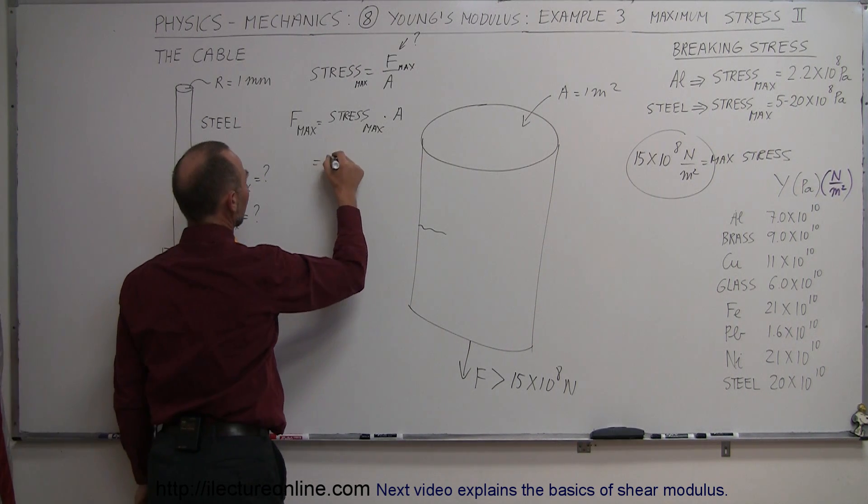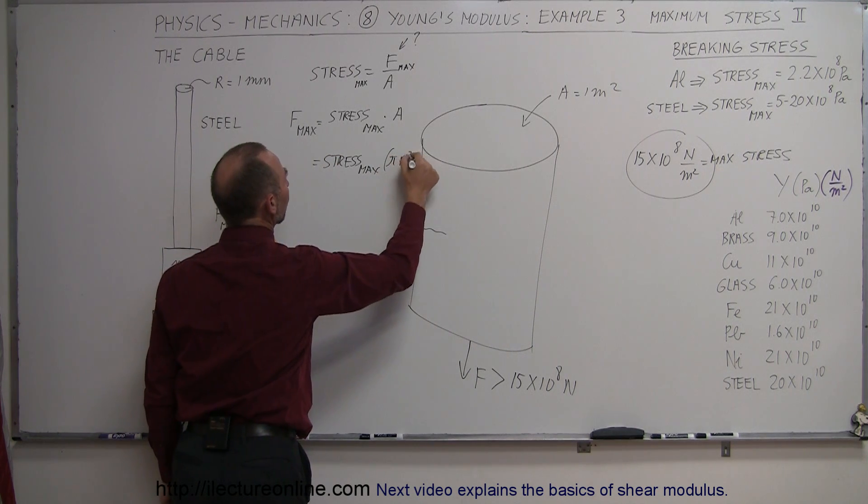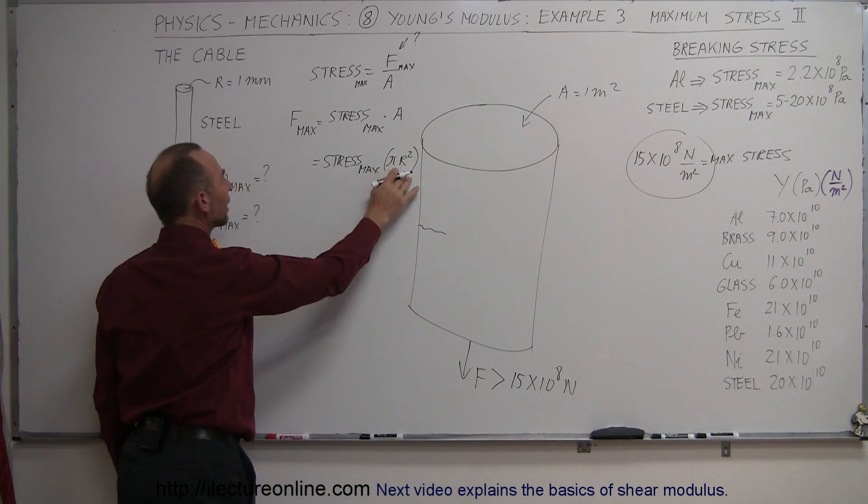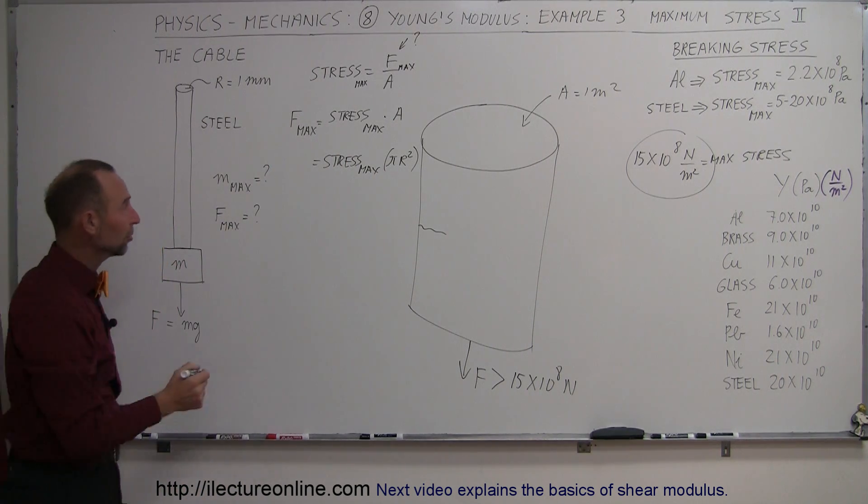Cross-sectional area, of course, for a cable is equal to pi r squared. So we have to multiply this times pi, and the radius squared, and the radius was given to us as 1 millimeter. All right, let's plug in the numbers, see what we get.